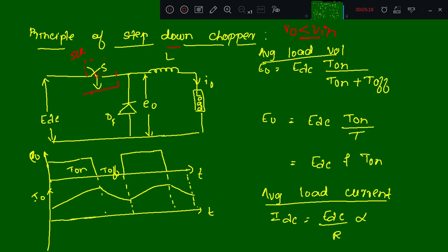When the SCR is conducting — when the switch is closed — the path of the current is from EDC positive, through the switch, through the inductor, through the load, and then to EDC negative. During this period, the inductor stores the energy.